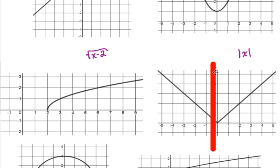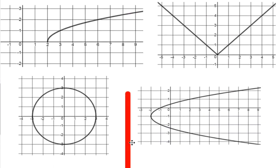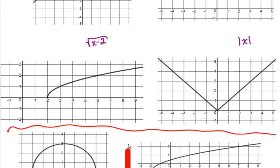The absolute value of x, it passes the vertical line test. So those four functions right there, they all represent, and I'm going to draw a little line right here. These are all functions.